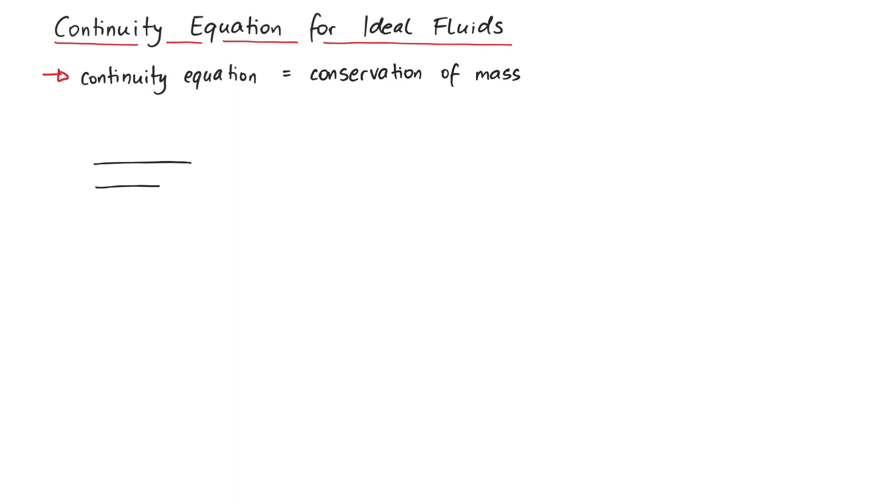Imagine a tube which is narrow at first, but then becomes wider towards the right. If we assume a constant flow, then a certain volume of fluid with mass m1 flowing in must lead to a certain volume of fluid with mass m2 flowing out.